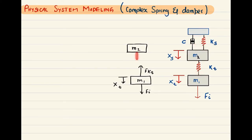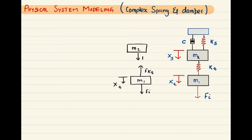So on M2 we have three forces: FkT acting as an input force pulling this mass downward, and two reactive forces — Fks pulling upward and the damper force Fc pulling upward as well. M2 has a displacement alongside named Xs.